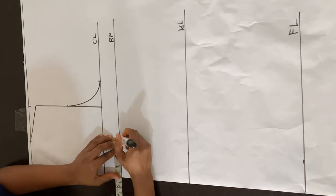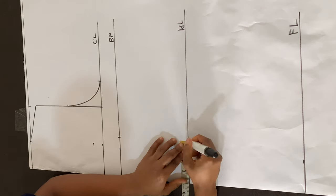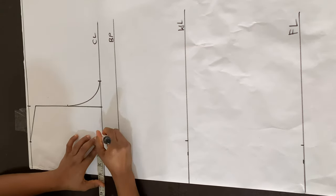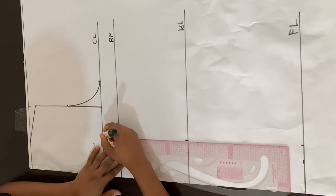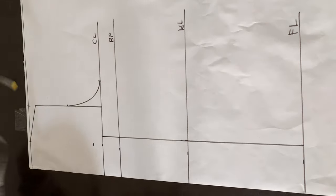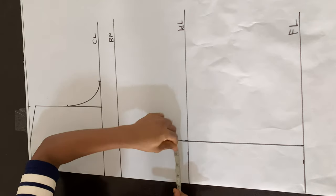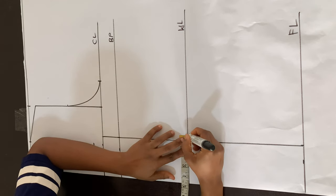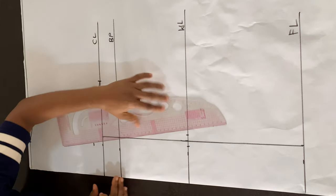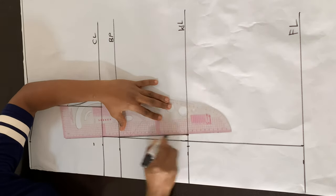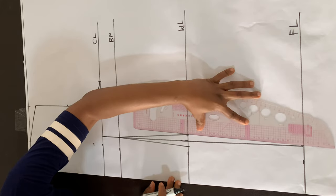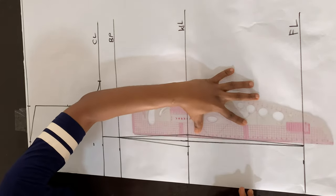To create the darts for this blazer, I'm marking the bust span divided by two, which is four inches — the bust span is eight inches divided by two. I'm marking that from the edge of the paper. At the waistline I went in by half an inch on both sides, connecting this to the bust point and also to the full length line. Note that I didn't connect this all the way to the chest line.